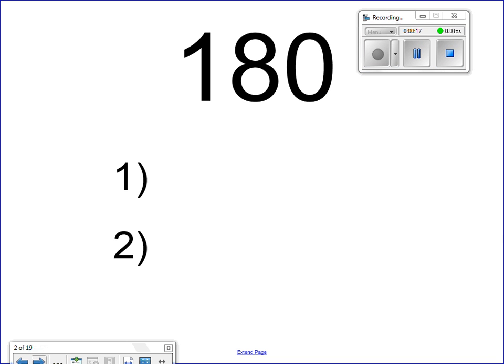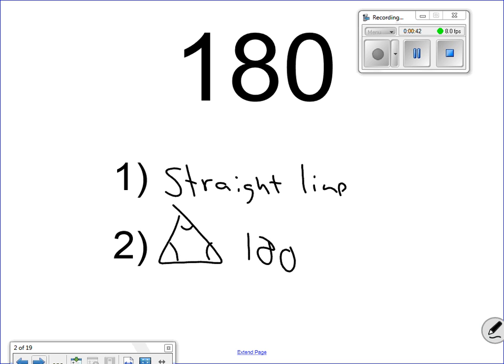First of all, we have the number 180. There's two things I've been wanting you to remember with the number 180. First, the number 180 is a straight line, right? When I add up all the angles on a straight line, it will always equal 180. Another thing is, with a triangle, if you add up all the angles inside a triangle, it will also always equal 180.